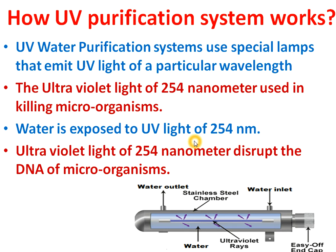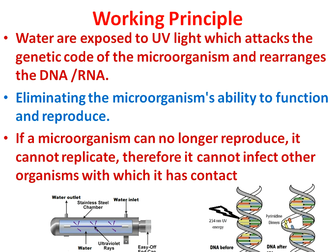When water passes through and is exposed to the UV light, the microorganisms' DNA at the inlet looks intact. But when exposed to 254 nanometer UV light, this light attacks and destroys the DNA of the microorganisms. At the outlet, the DNA becomes destroyed — you can see the difference between the DNA structure at the inlet versus the outlet.